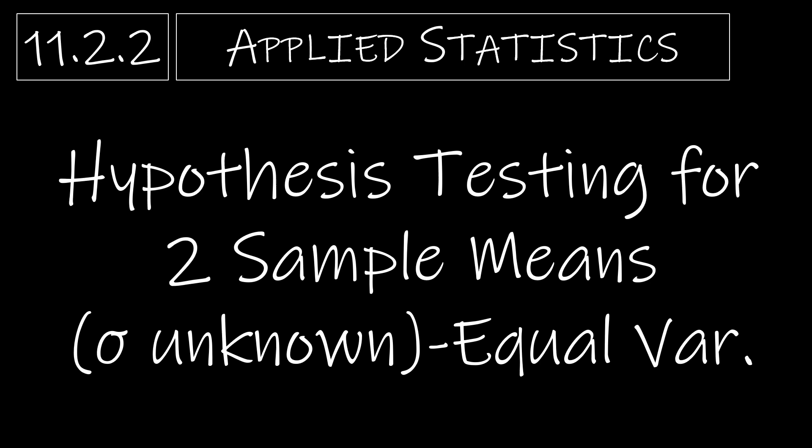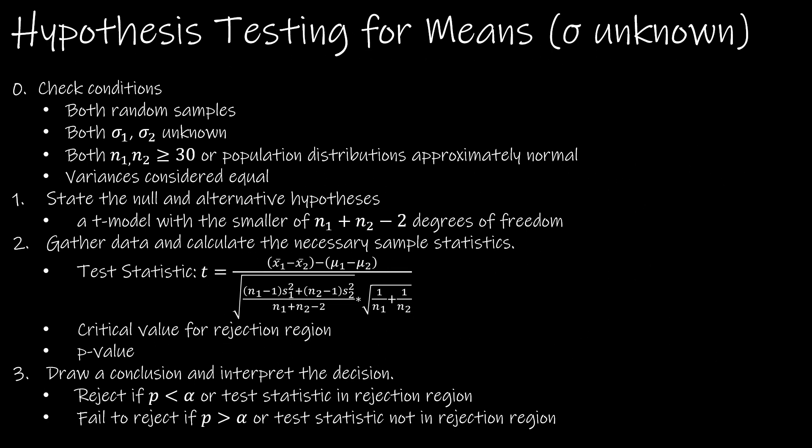In this video, we're going to take a look at hypothesis testing for two sample means where sigma is unknown, this time for variances that are assumed to be equal. Notice that I did give you a summary sheet for this particular test, and typically I wouldn't in the second video of a section, but the reason that I had to is because this is going to be different.